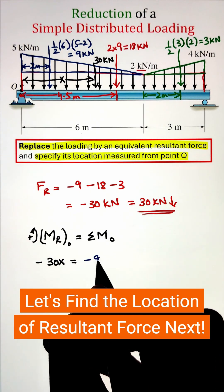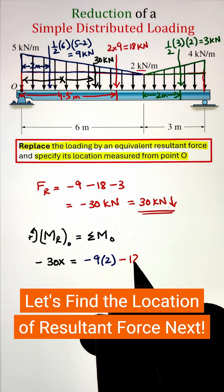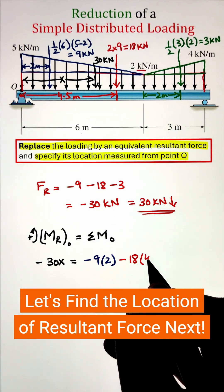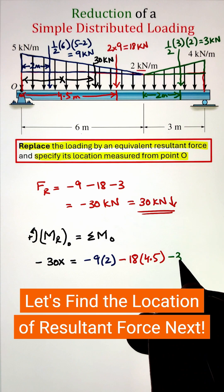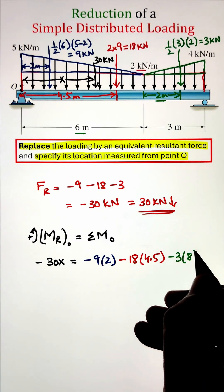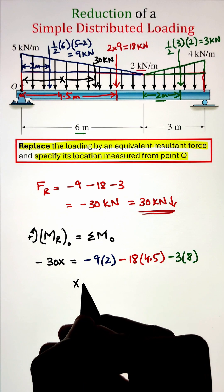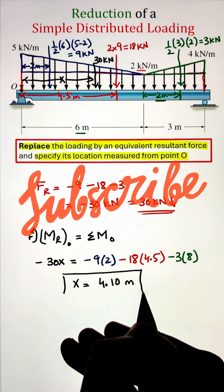So to start, our 30 kilonewton will make a clockwise moment with a moment arm of x, whereas the 9 kilonewton, 18 kilonewton, and 3 kilonewton all of them will make a clockwise moment as well with the moment arm of 2 meters, 4.5 meters, and 8 meters respectively. Simplifying, we get our value of x as 4.1 meters.